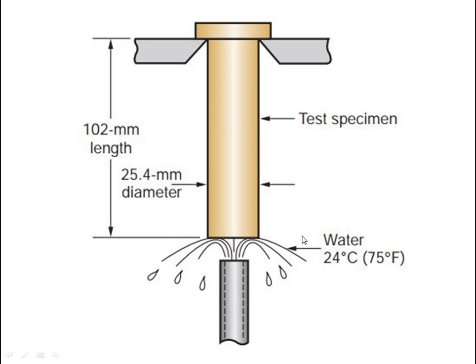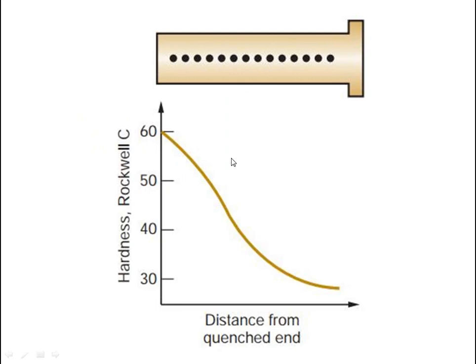There is also a figure showing how quenching is performed on a test specimen with a length of 102 mm and a diameter of 25.4 mm. Water is supplied at a temperature of 24 degrees Celsius. Another diagram shows hardness versus distance from the quenched end.